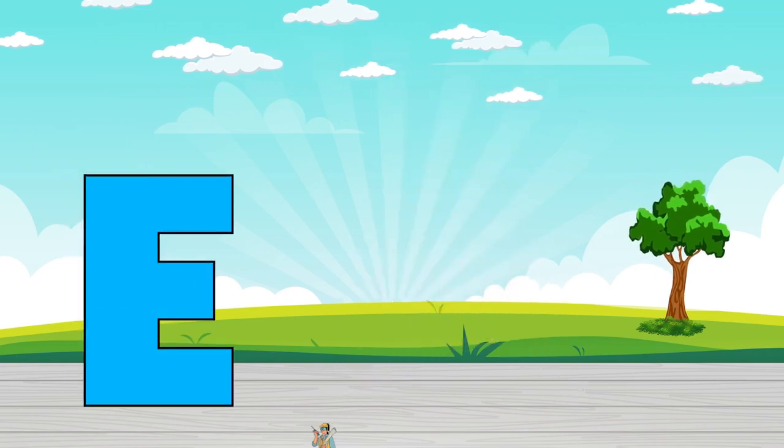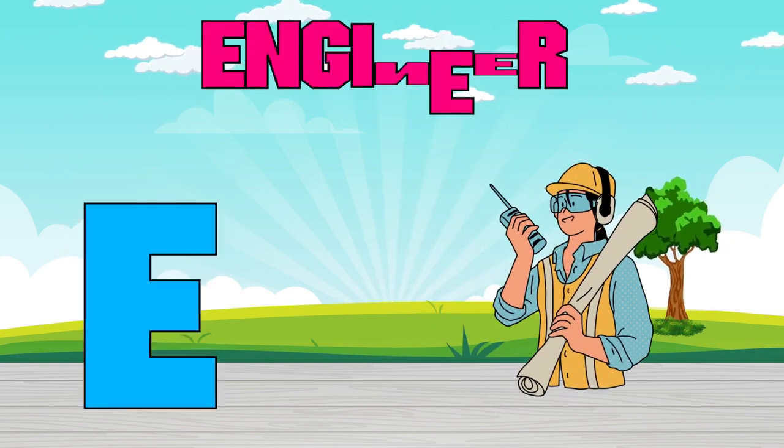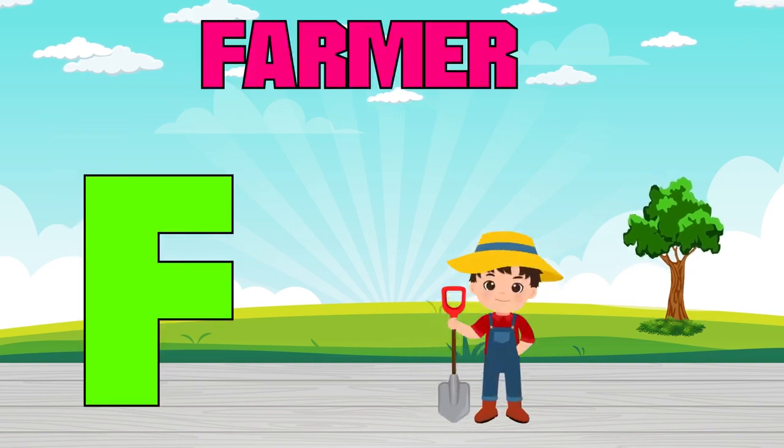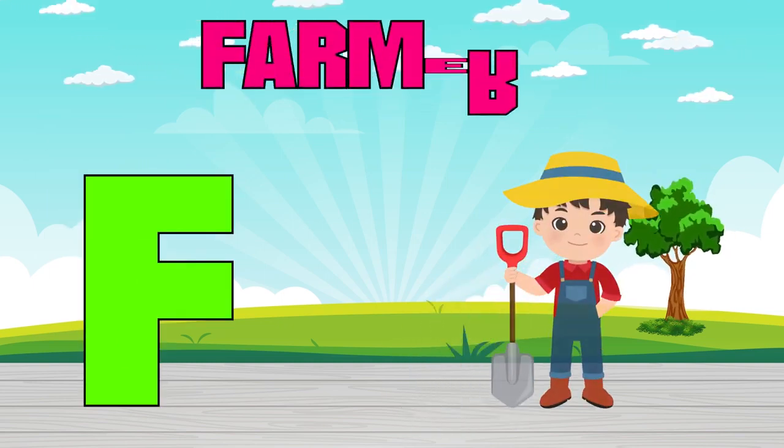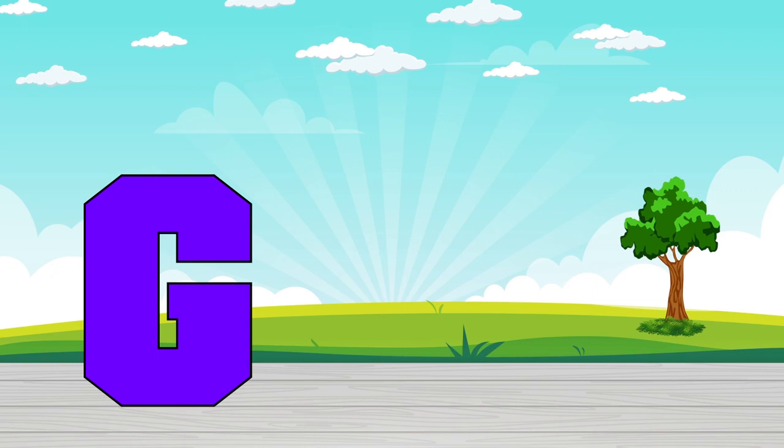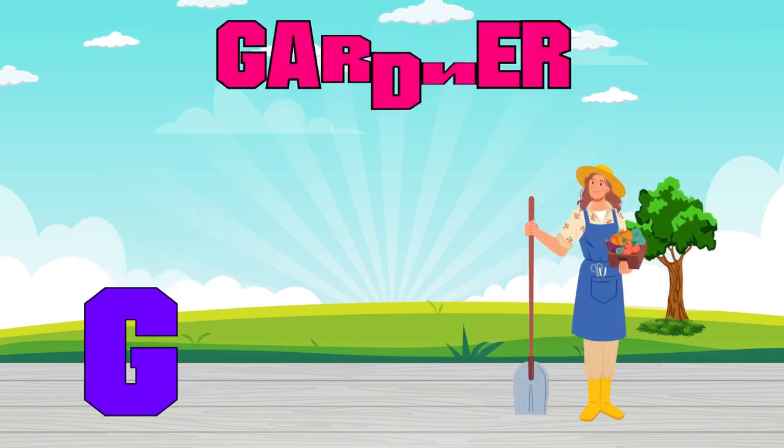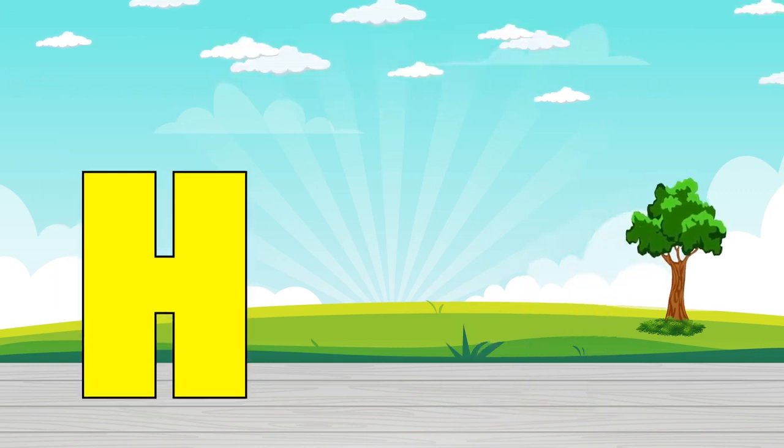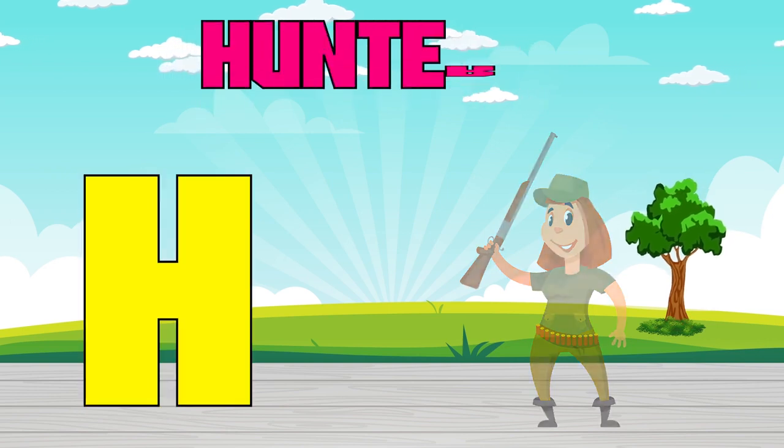E is for engineer, e, e, engineer. F is for farmer, f, f, farmer. G is for gardener, g, g, gardener. H is for hunter, h, h, hunter.